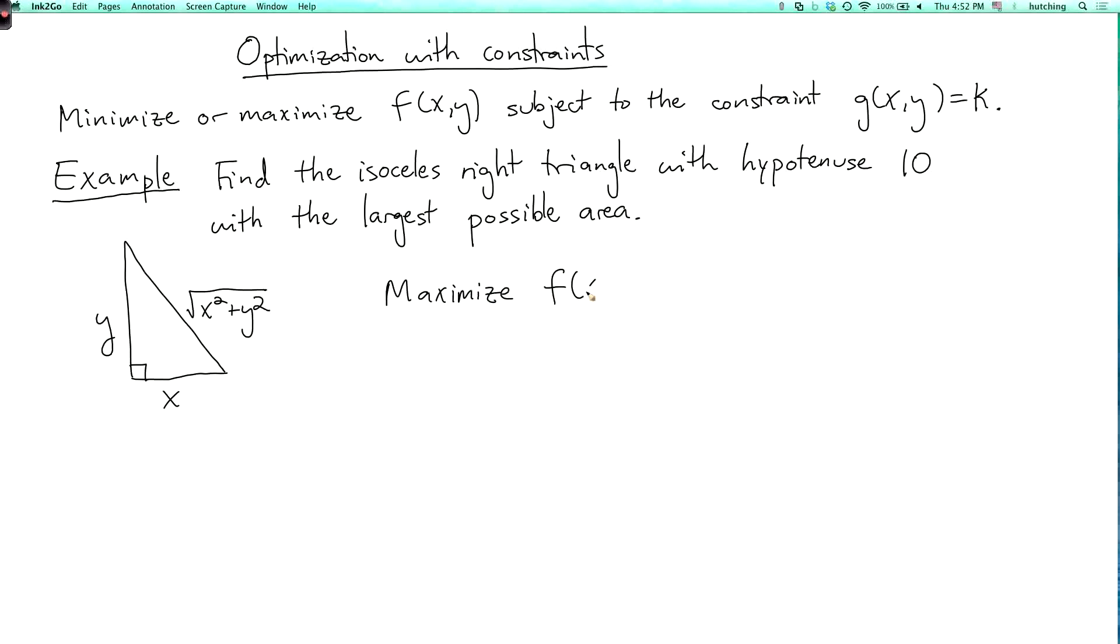We're trying to maximize the area, and the area we call it f of x, y, is xy over 2. And the constraint is g of x, y equals the square root of x squared plus y squared is required to be 10.